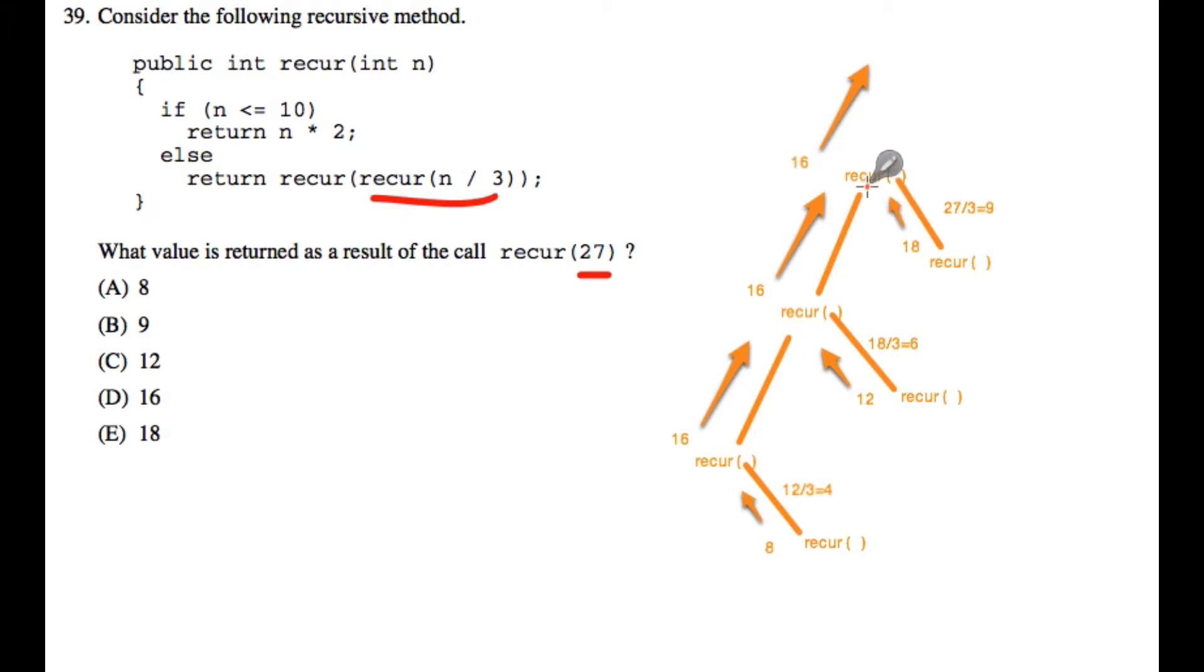So the second recursive call will be with 18. And in this case, we need to do that sub call to figure out the parameter again. So that's 18 divided by 3, 6. We return 2 times 6 is 12.